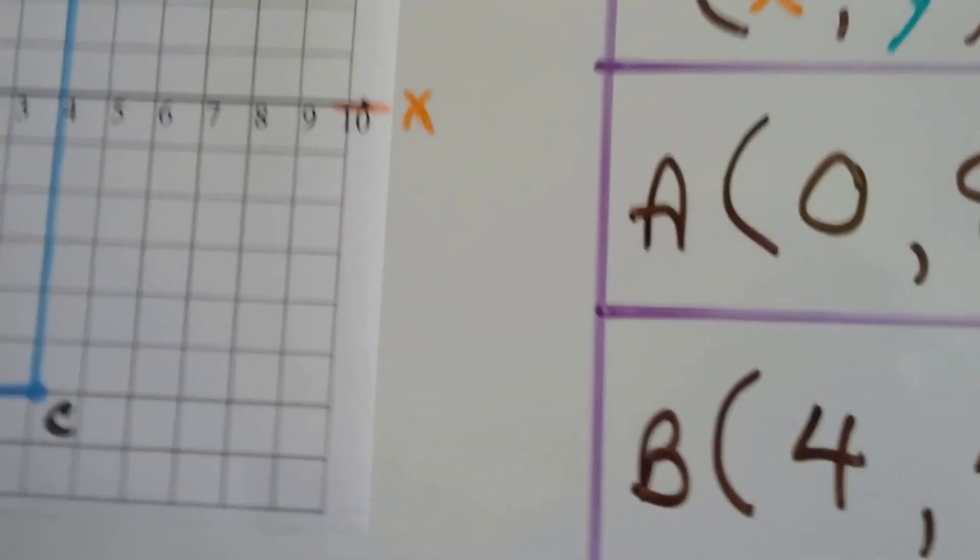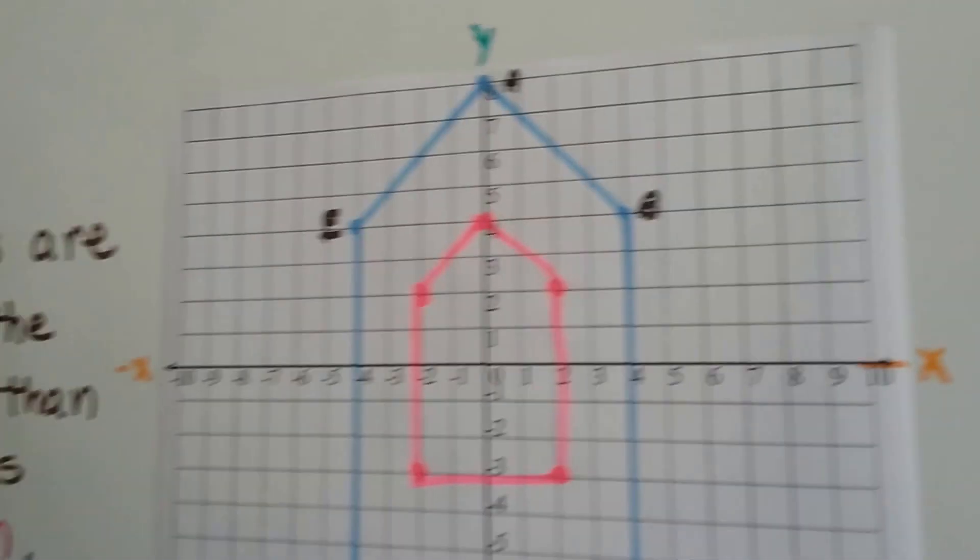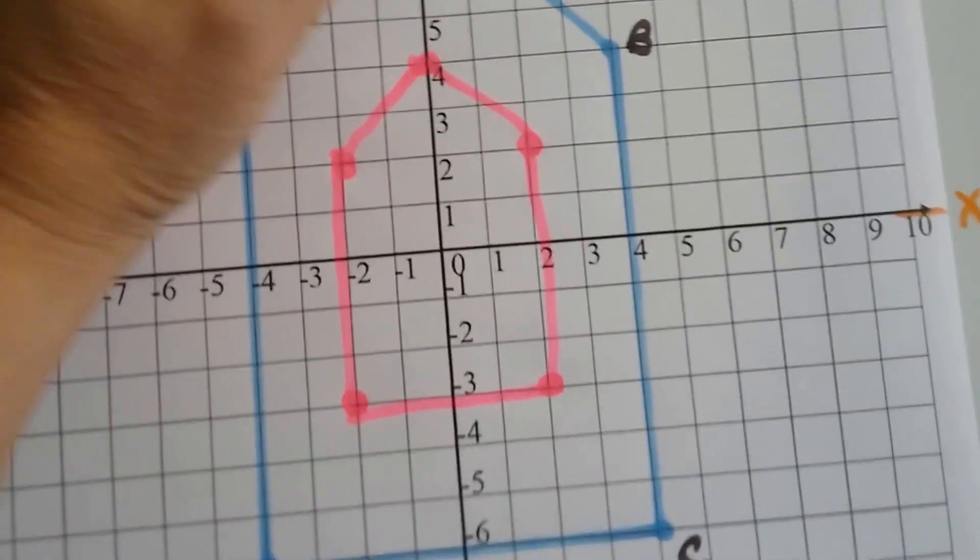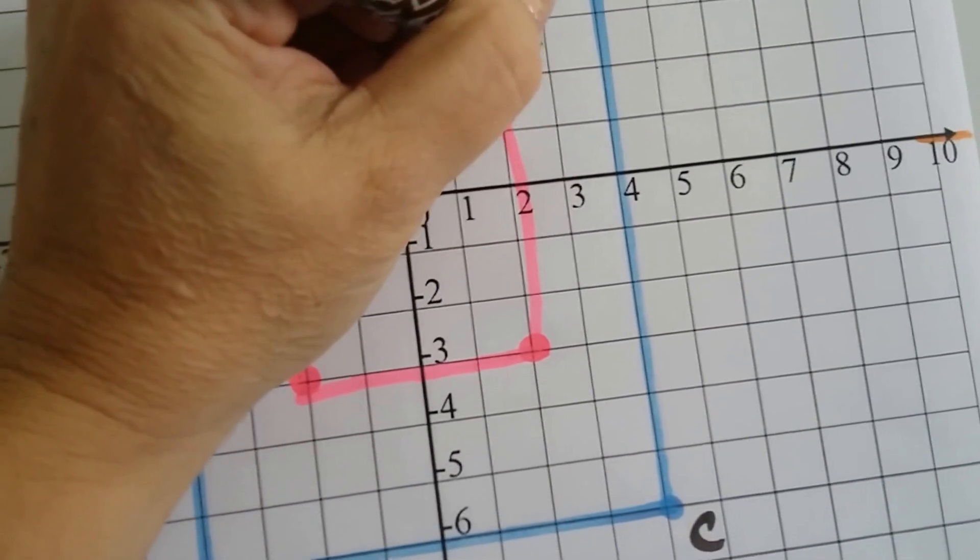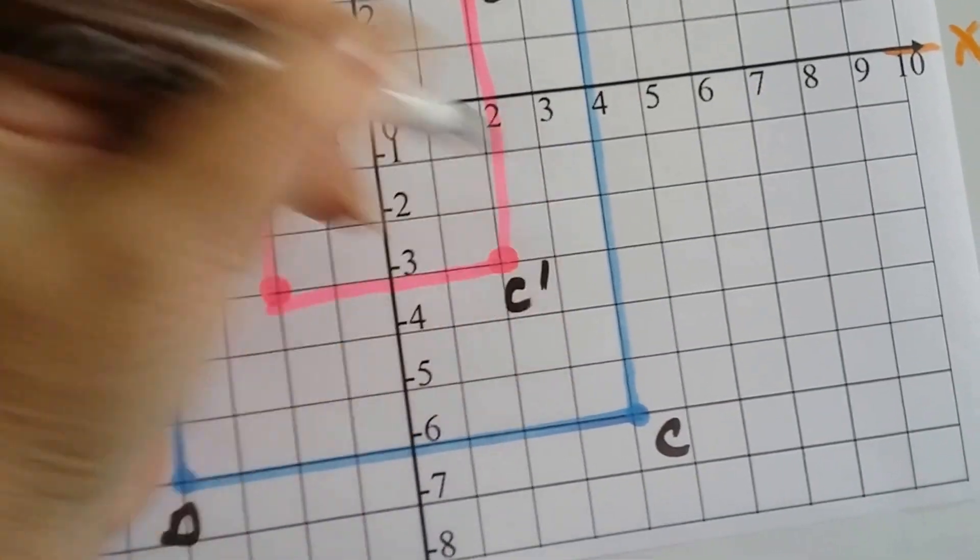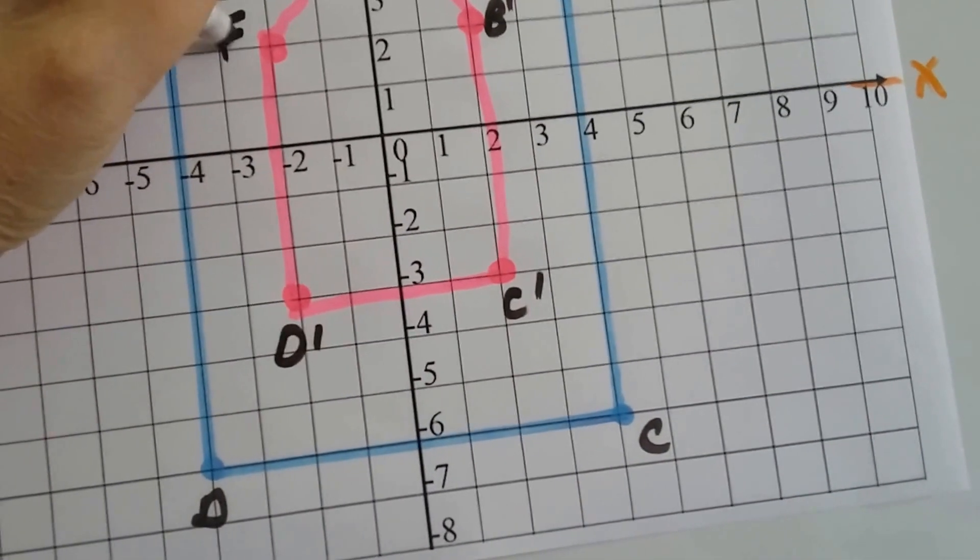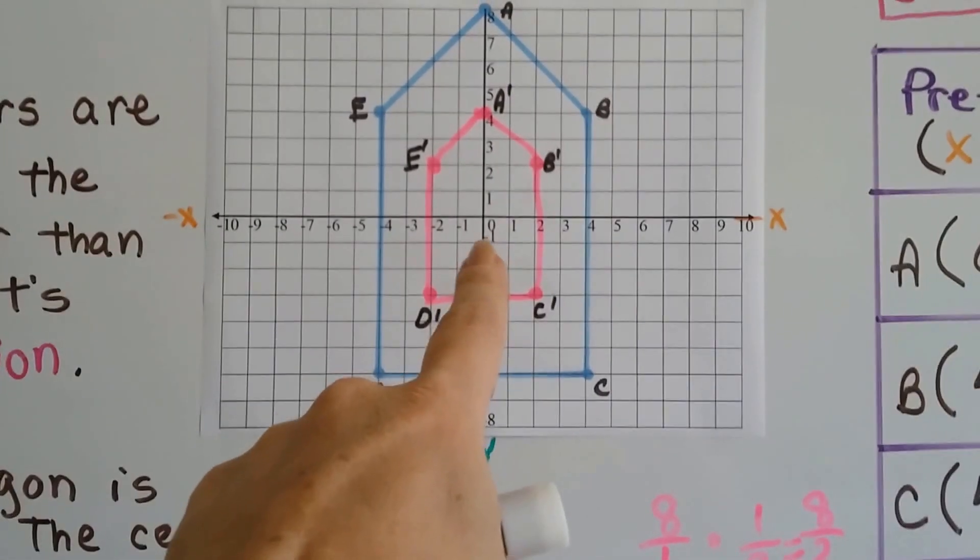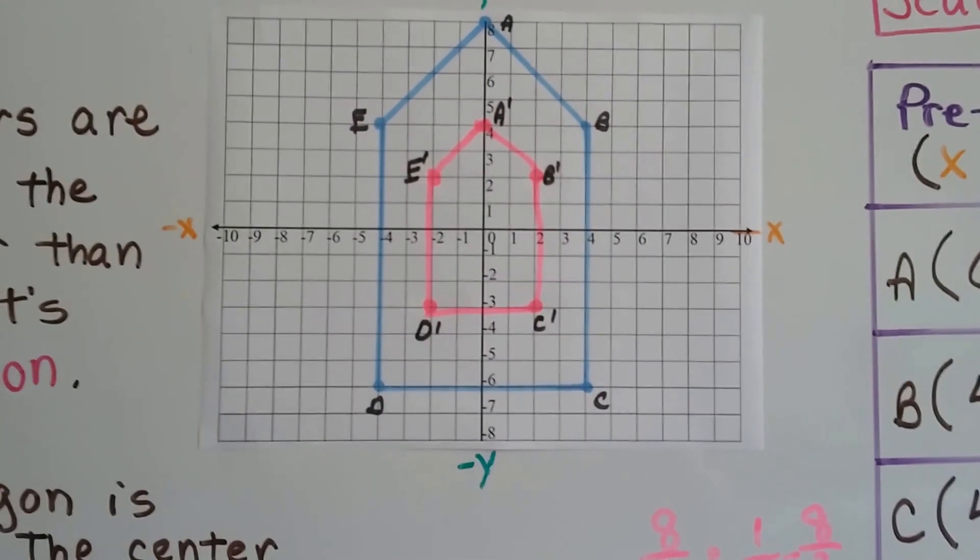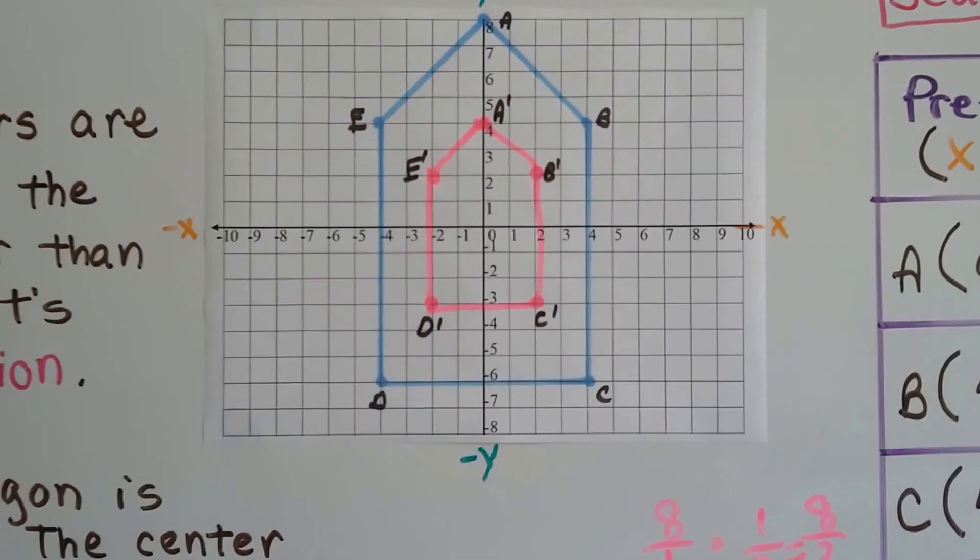Let me change markers here so we can list and label our new image. So now this is A prime. Right? This is B prime. This is C prime. This is D prime. And this is E prime. And it's got 0, 0 the origin as the center of dilation. See that? It's just a smaller version of it.